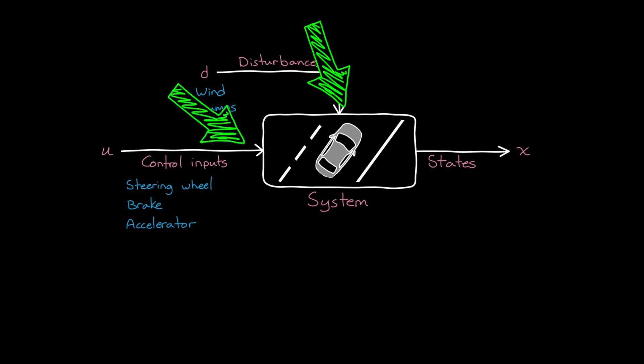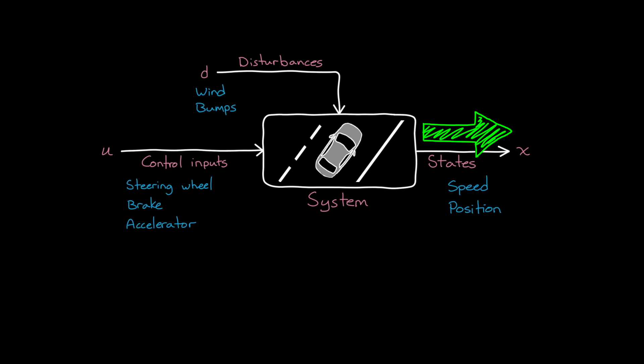Now, the inputs into the system interact with the internal dynamics, and then the system state X changes over time. So for a car, we move the steering wheel and we press the pedals, which turn the wheels and revs the engine, producing forces and torques on that vehicle. And then combined with the forces and torques from the disturbances, the car changes its speed, position, and direction.